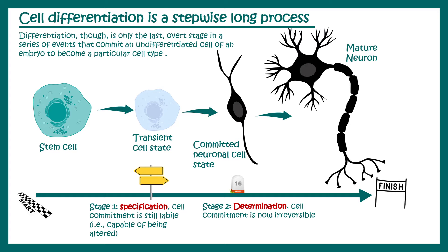Differentiation is one of the most complicated processes. The second stage of differentiation is known as determination — it is a process of commitment. It's a decision point which is irreversible; once the cell is determined to become a particular cell type, it has to become that type. There is no way out.